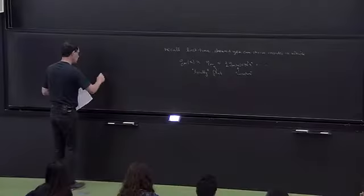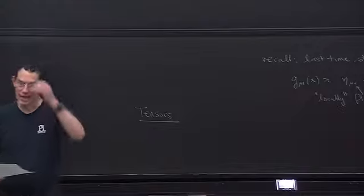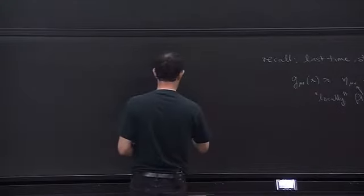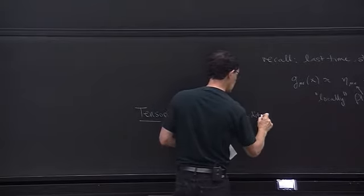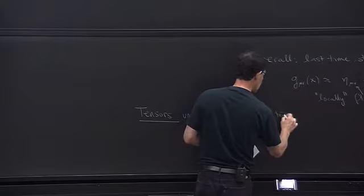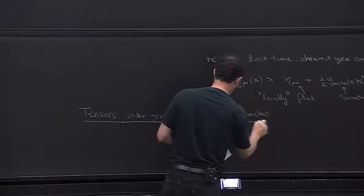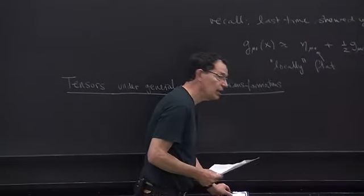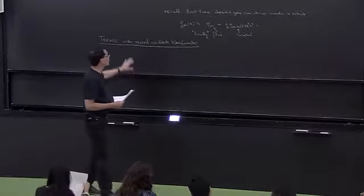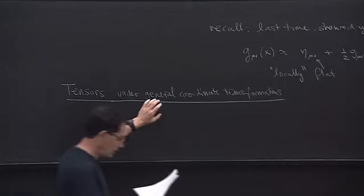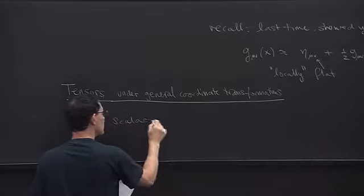Before doing that, let us step back a little bit and discuss general properties of tensors under general coordinate transformations. We've already discussed special relativity, where we require that everything be described as a tensor under Lorentz transformations. But when we do general relativity, we want everything to be a tensor under general coordinate transformations. An example would be a scalar — some quantity with no indices.